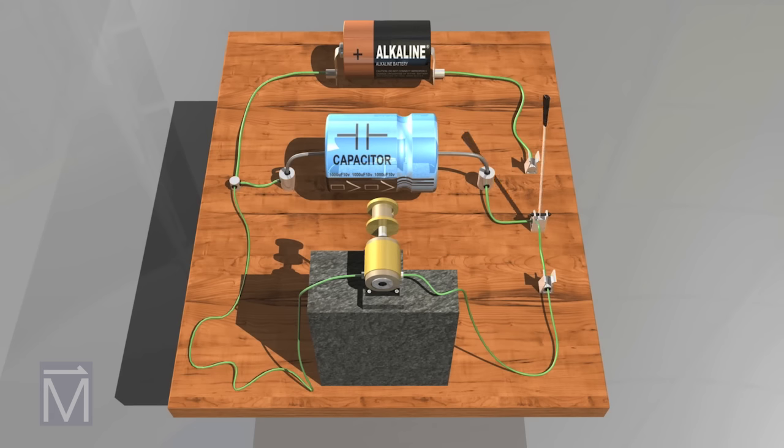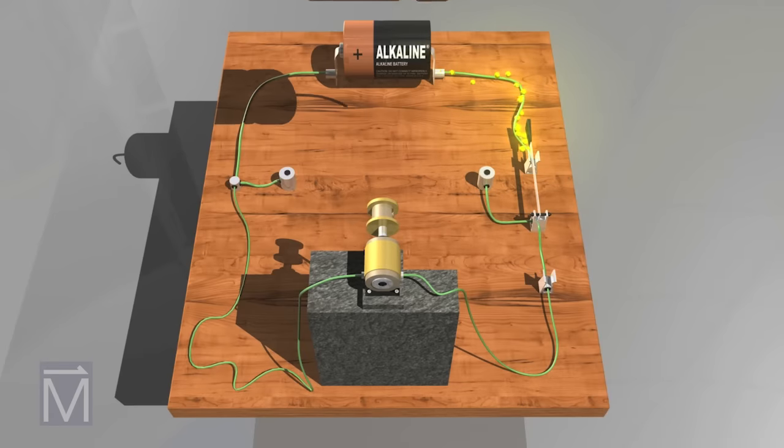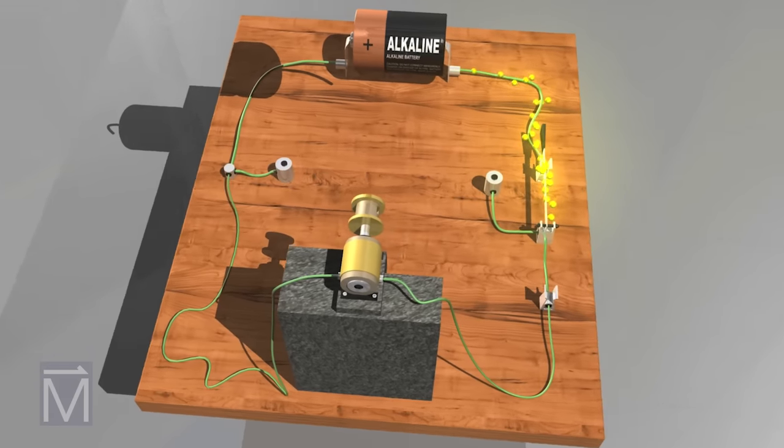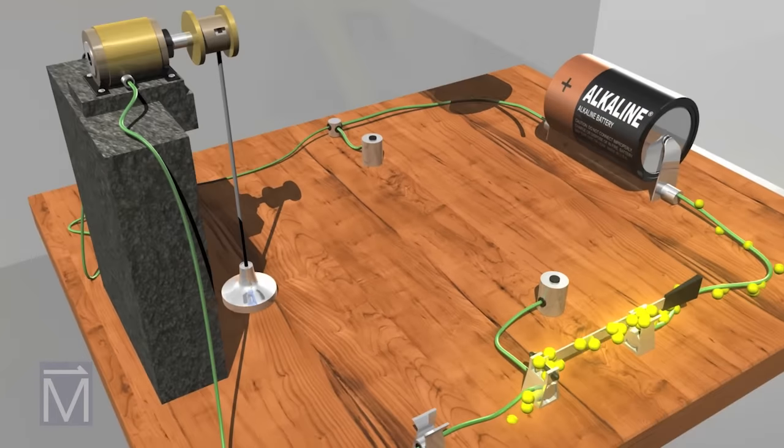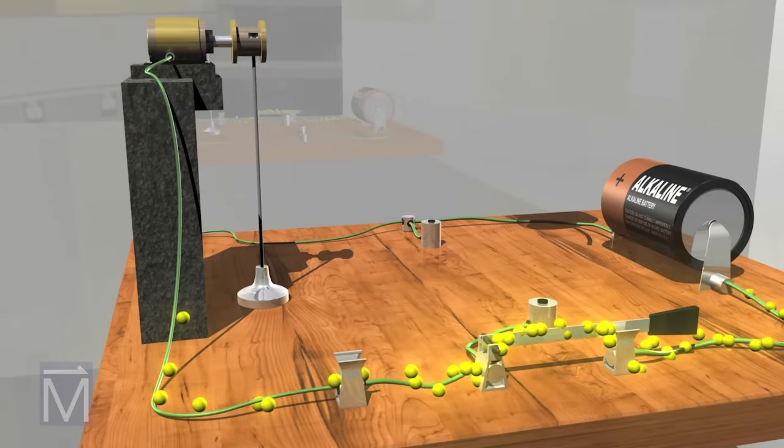When we close the switch, electricity immediately runs throughout the circuit. Although the convention is to think of electrical current as moving from positive to negative, electrons actually move from negative to positive, as we represent here with yellow particles.